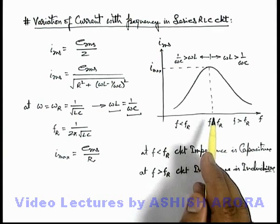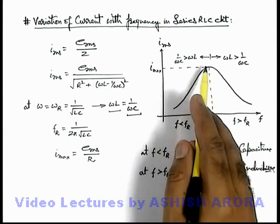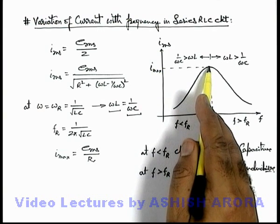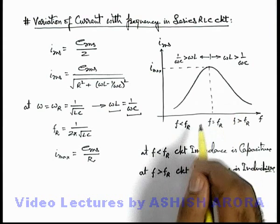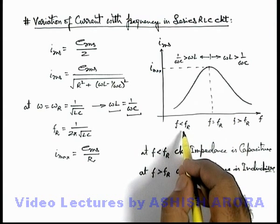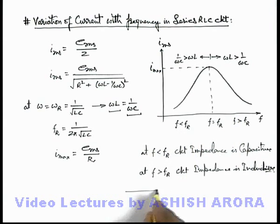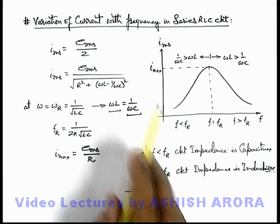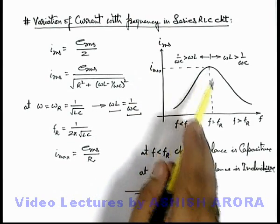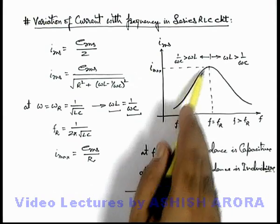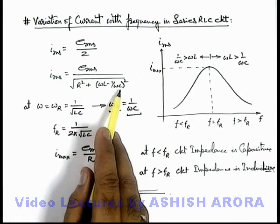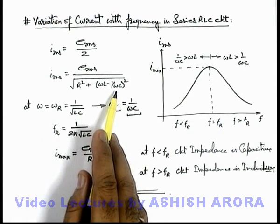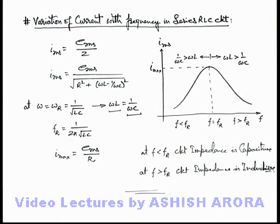At the resonant frequency, the current is in phase with the EMF. At frequencies greater than the resonant frequency, the current lags behind the EMF since the impedance is inductive. At frequencies less than the resonant frequency, the current leads the EMF since the impedance is capacitive. The current is maximum at resonant frequency and drops on both sides because circuit impedance increases due to either inductive or capacitive effects.